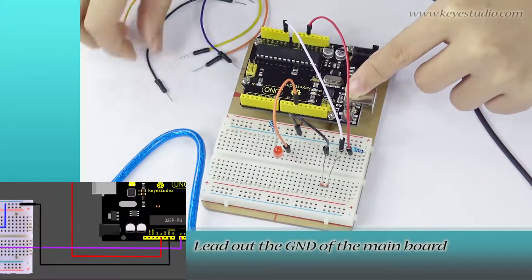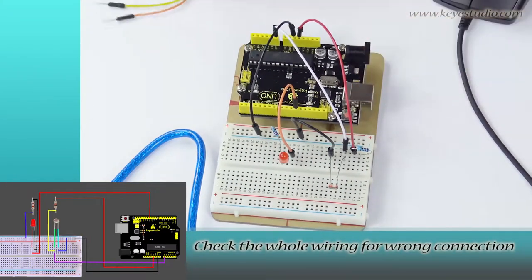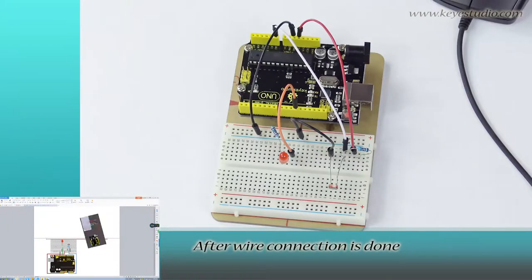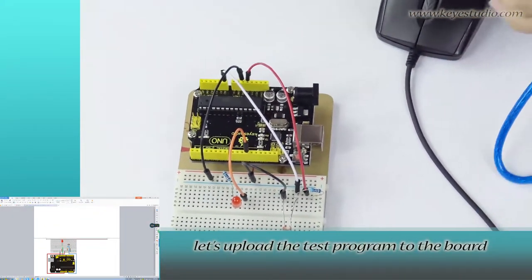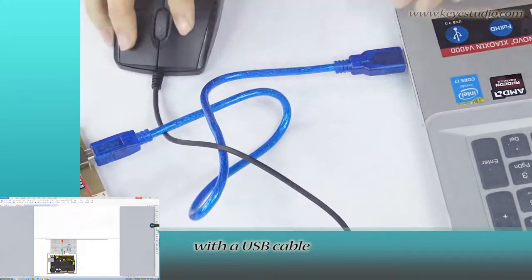Lead out the ground of the main board. Check the whole wiring for wrong connection. After wire connection is done, let's upload the test program to the board. Connect your UNO to computer with a USB cable.